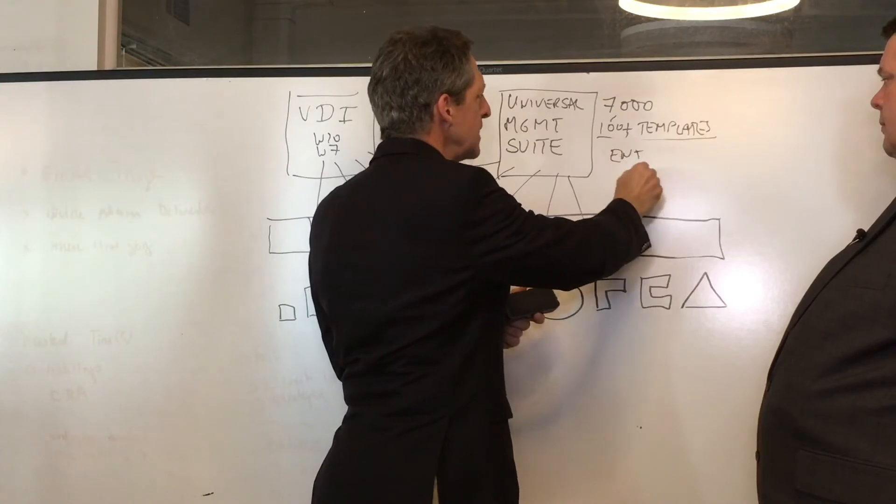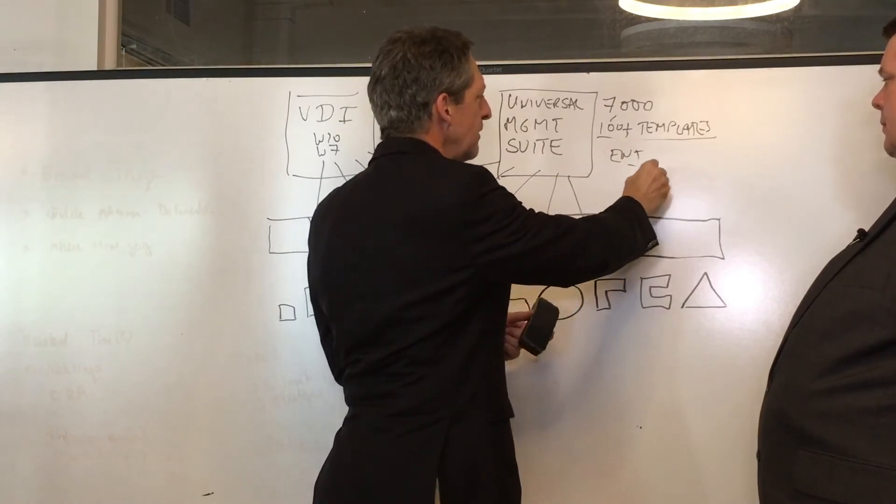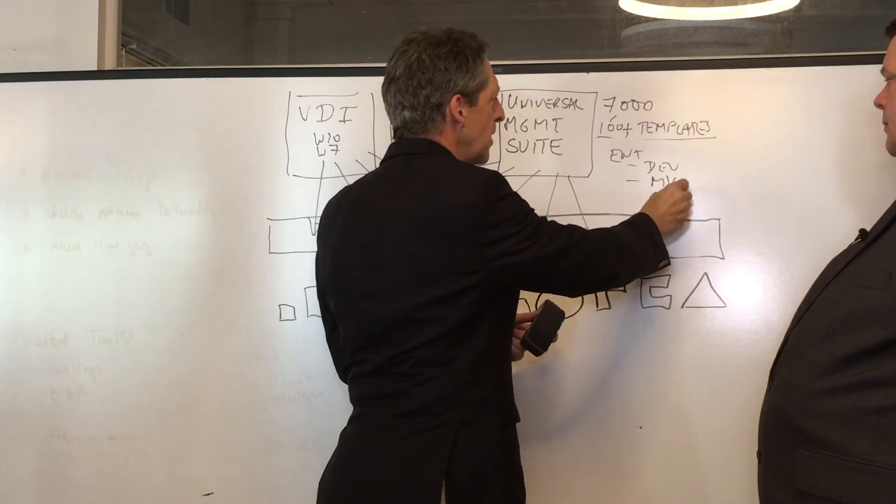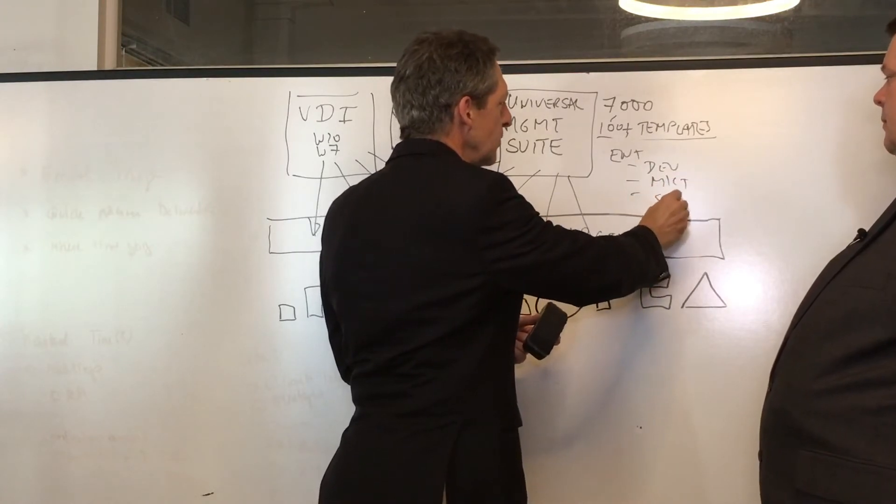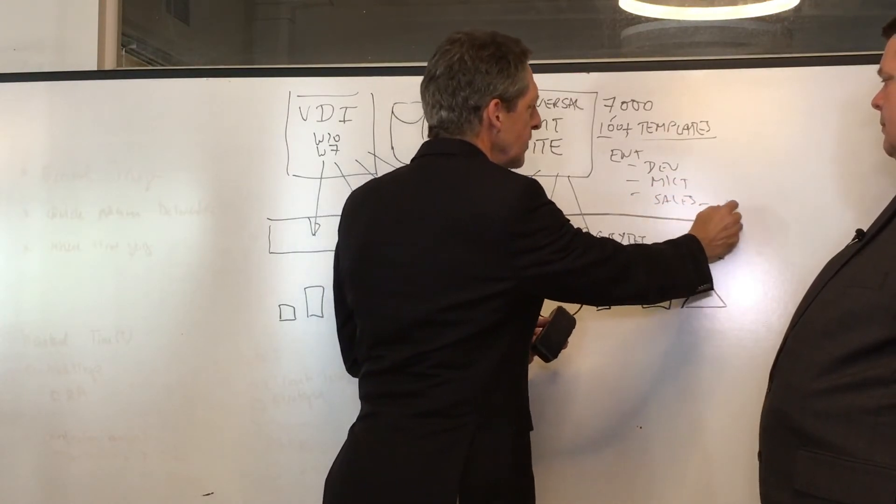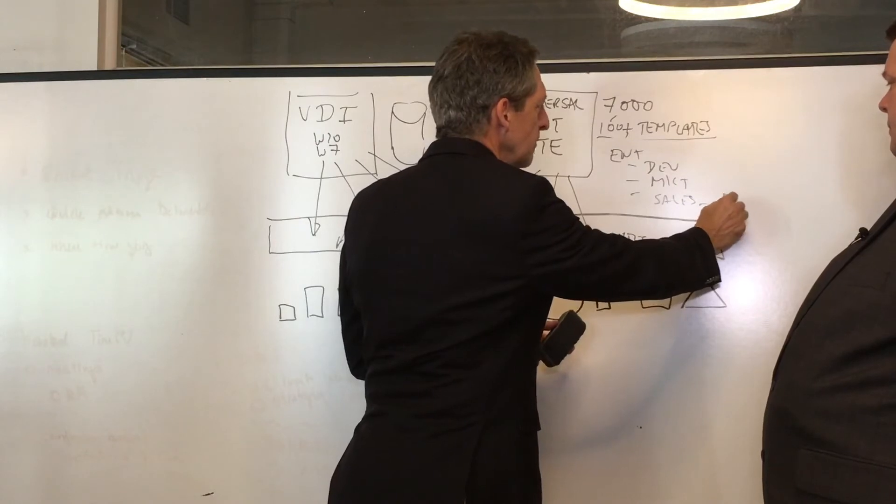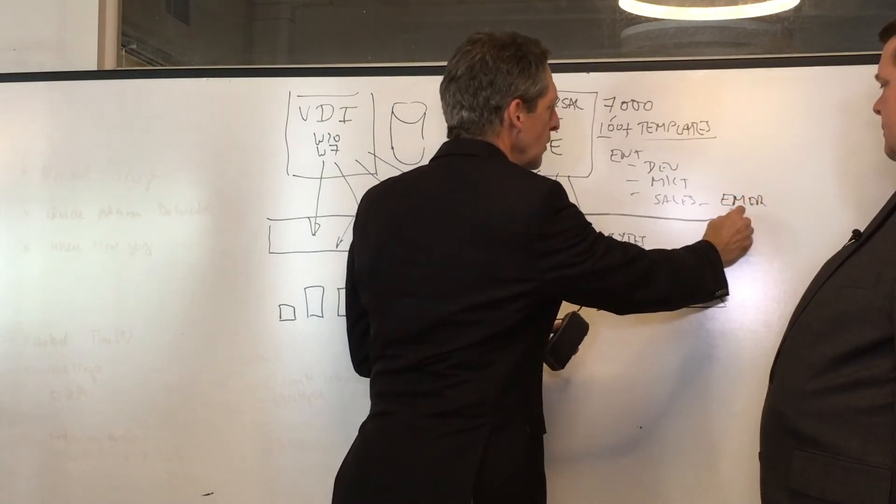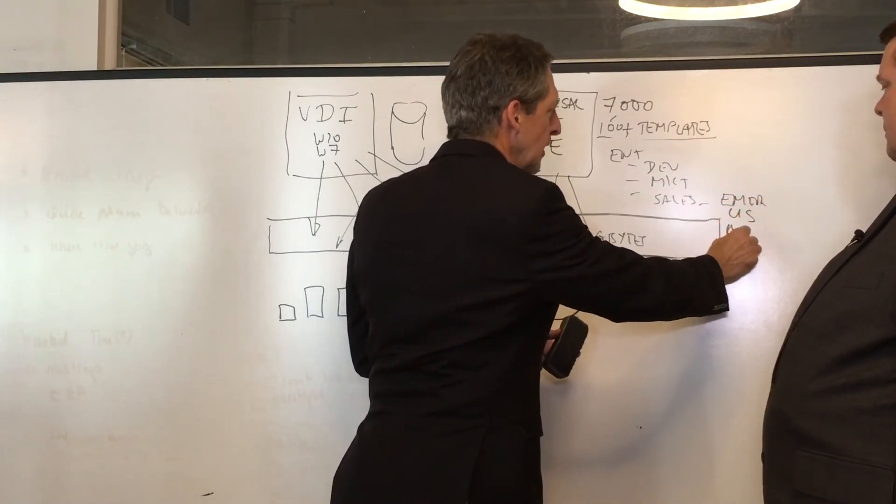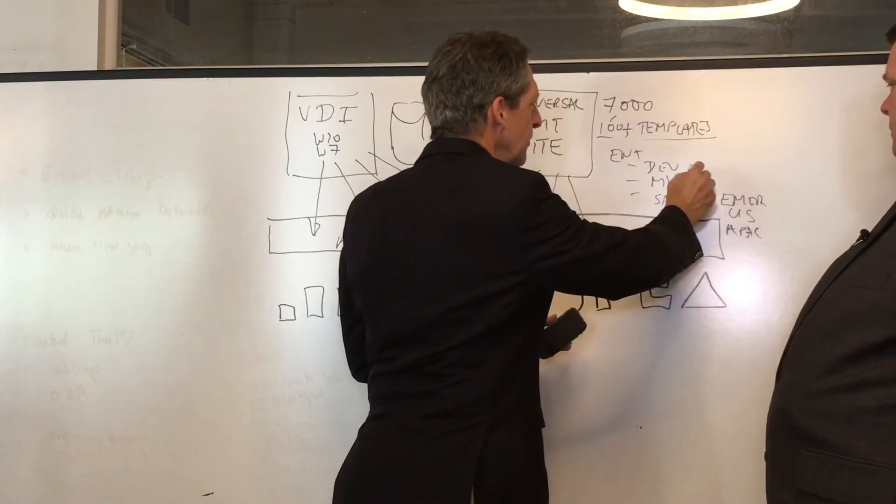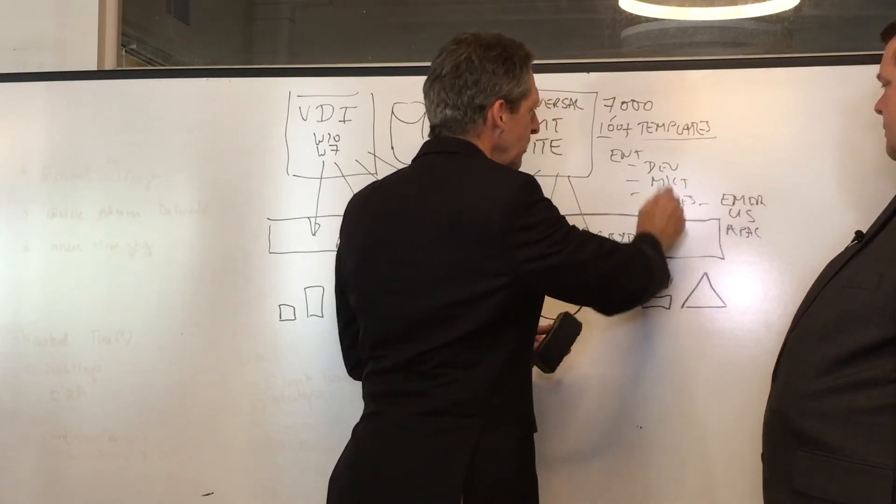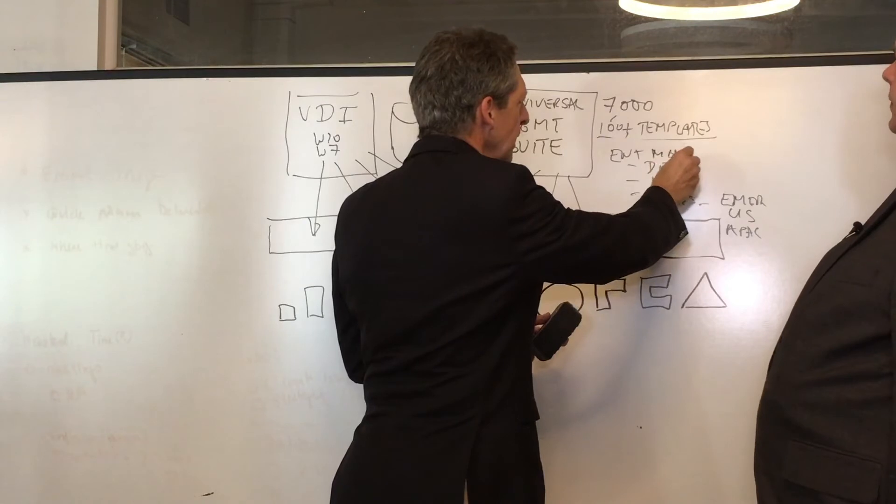We've got the enterprise. Underneath the enterprise, we have development. We have marketing. We have sales. We have the different geos. We've got EMEA. We've got the US. We've got APAC. And then under marketing, we'll add management up here.